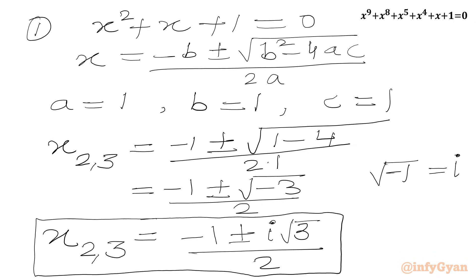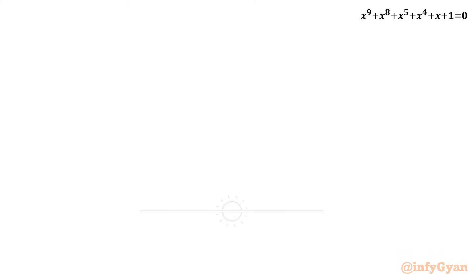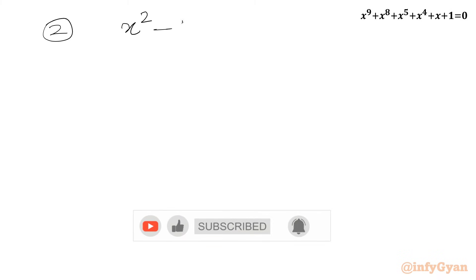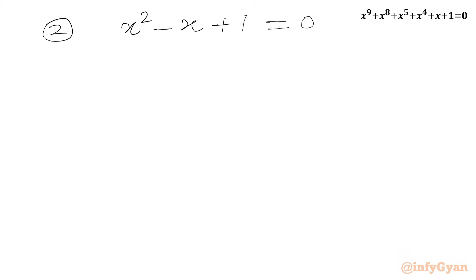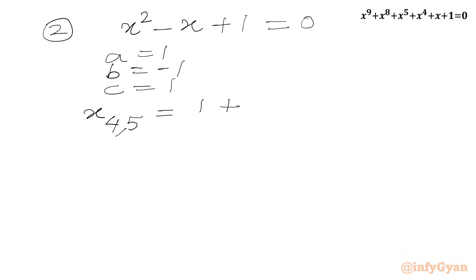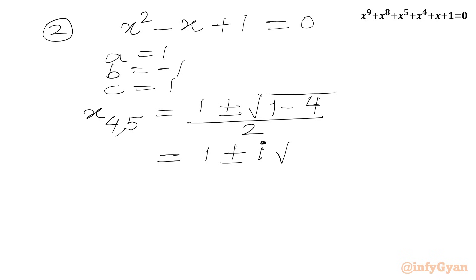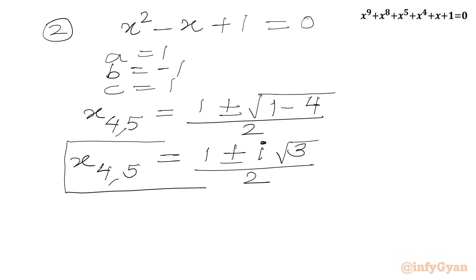Now we solve the second quadratic equation for x₄ and x₅. The equation is x squared minus x plus 1 equal to 0, with a=1, b=−1, c=1. Applying the quadratic formula: x equals 1 plus or minus square root of (1 minus 4) over 2, giving 1 plus or minus i root 3 over 2. So x₄ and x₅ are both complex roots.